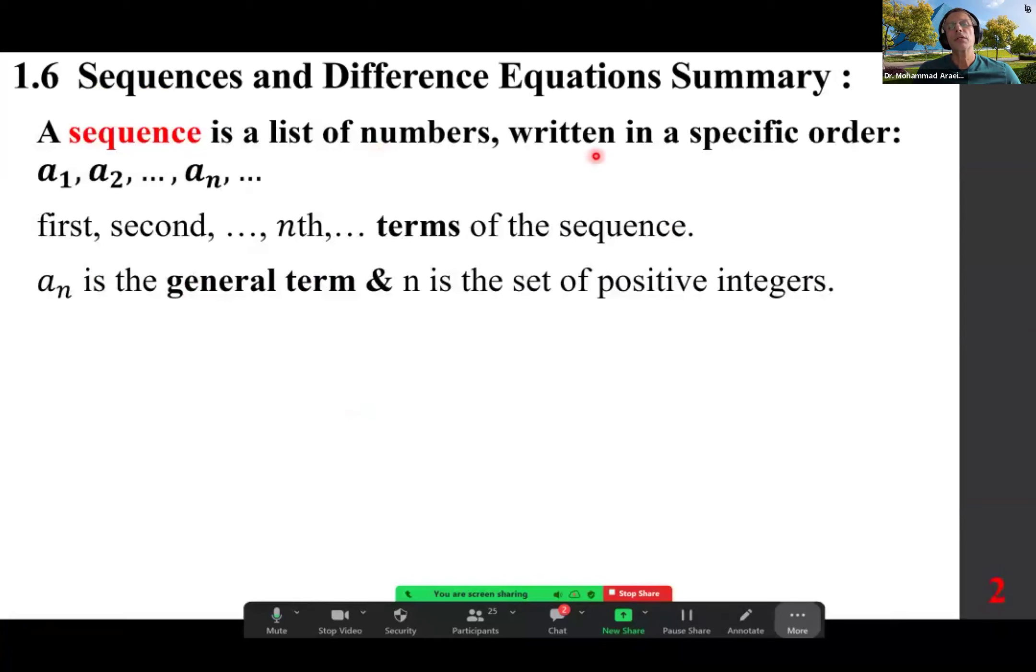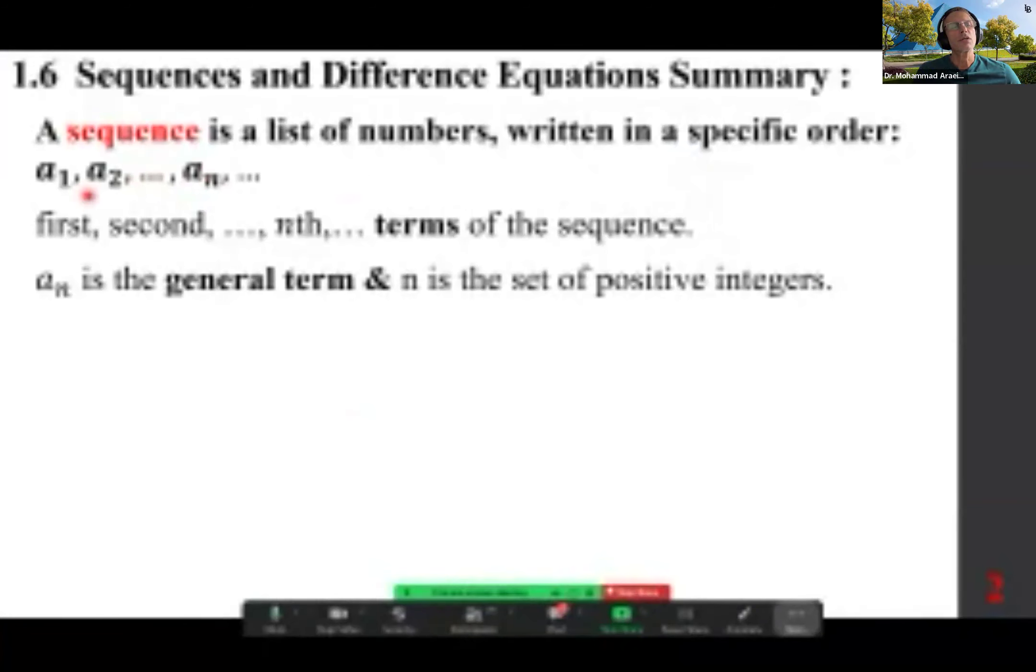A sequence, a list of numbers written in a specific order, a sub 1, a sub 2, all the way to a sub n. Here's the first one, second one, and the nth term.